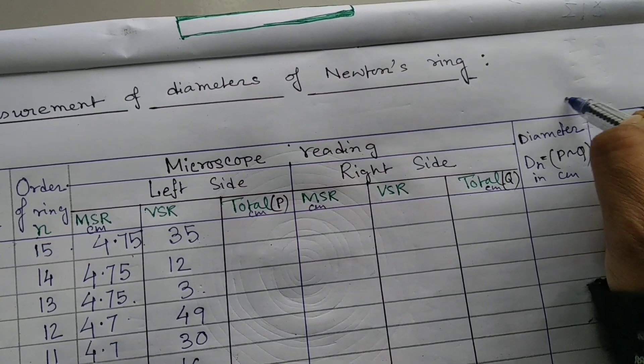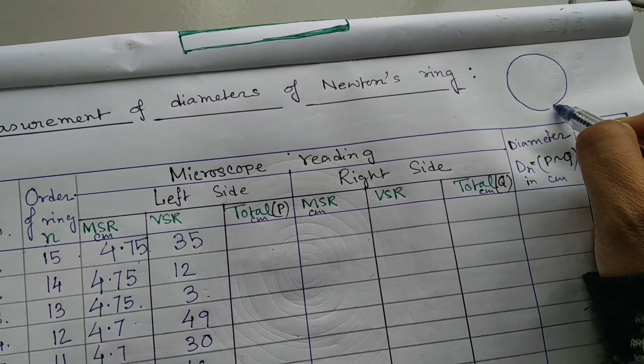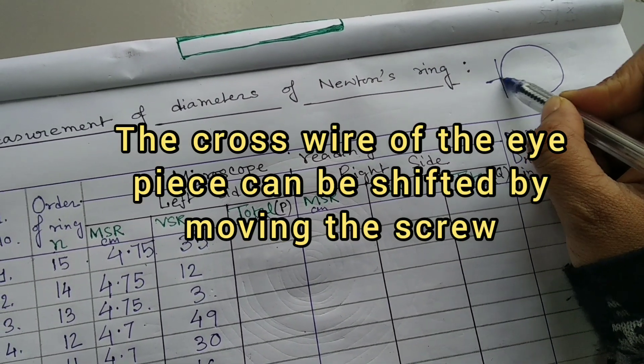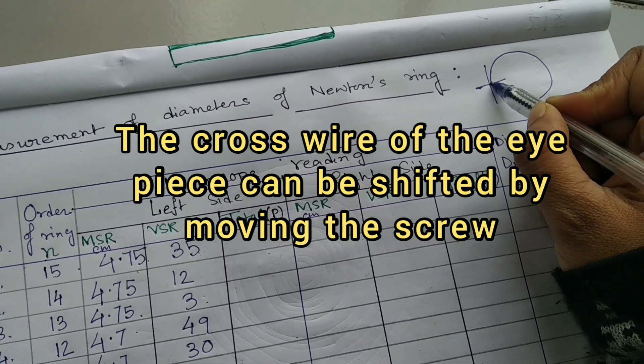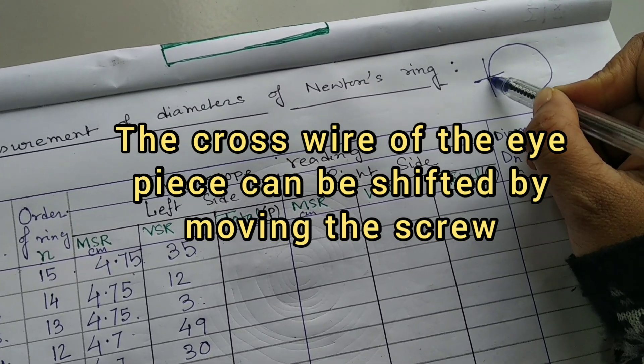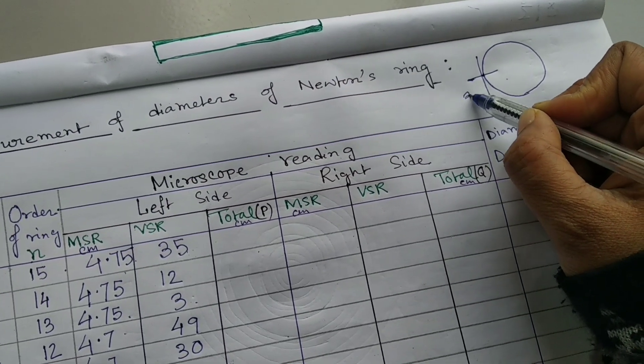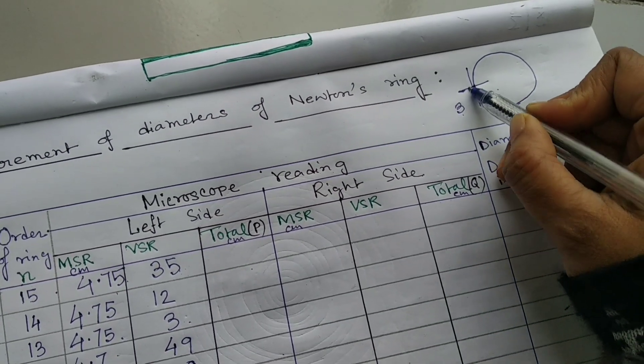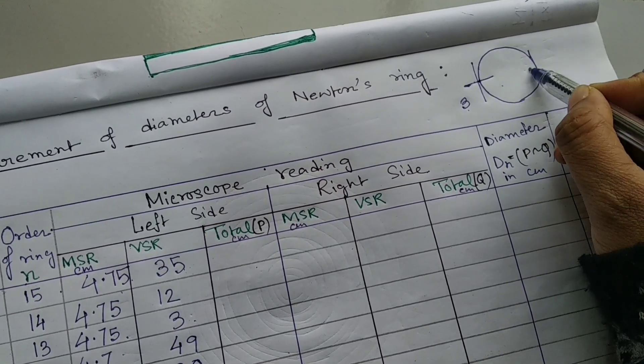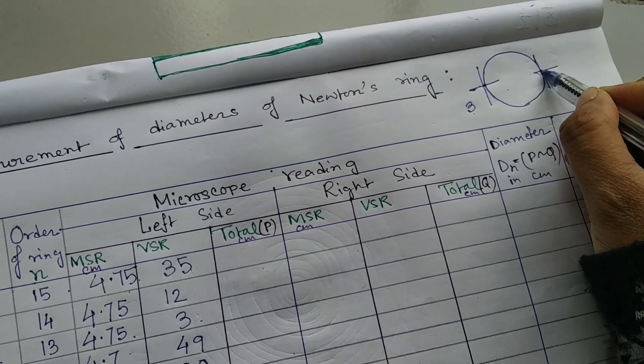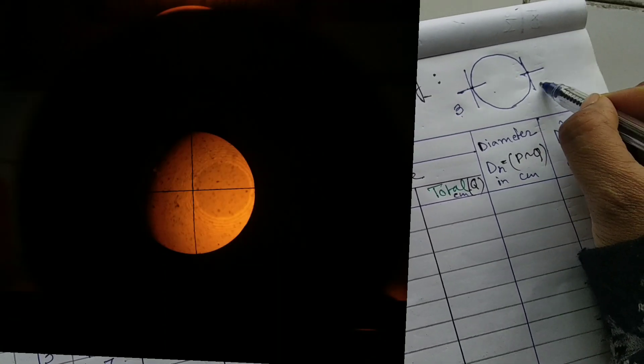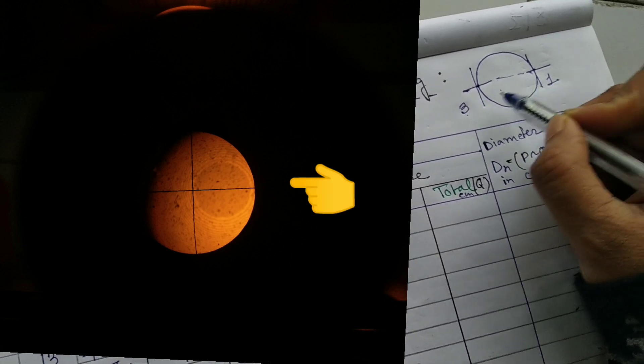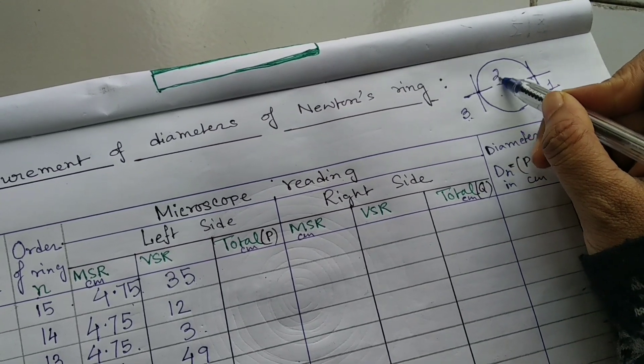What we are doing, suppose this is the circle or this is the dark fringes. The crosswire is placed at this point and take the reading. Suppose this reading is coming by 3, 3 cm, all total. Then, crosswire will be replaced at this point and take this reading. Suppose this reading is coming by 1. So, the diameter will be 3 minus 1, 2 cm.